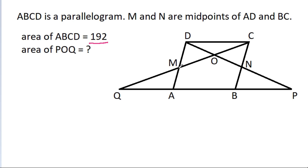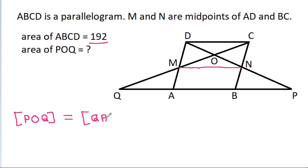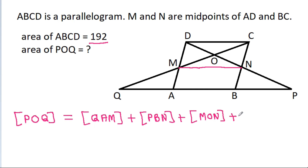If we join MN, then the area of POQ will be equal to the area of QAM, plus the area of PBN, plus the area of MON, plus the area of ABNM.